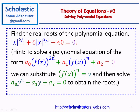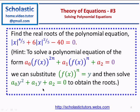Hint: To solve a polynomial equation of the form a0 times f(x) to the power 2n, plus a1 times f(x) to the power n, plus a2, equal to 0, we can substitute f(x) to the power n equal to y, and then solve a0 times y squared plus a1 times y plus a2 equal to 0 to obtain the roots. What we get is a quadratic equation.